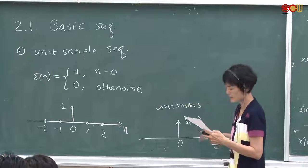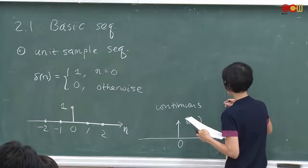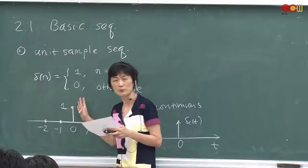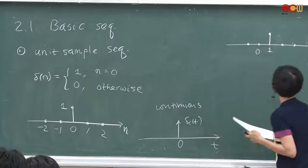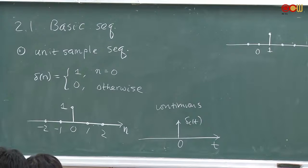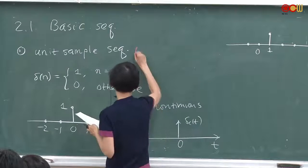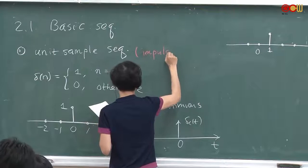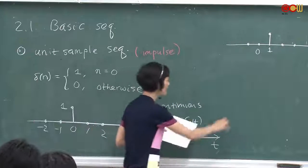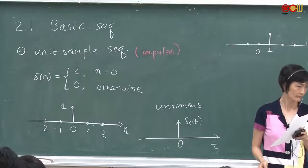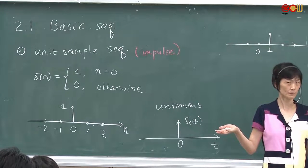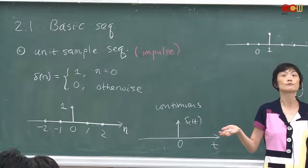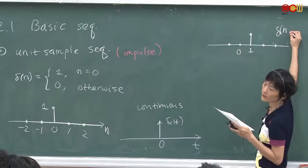This is delta(n) and here's the continuous version. We may also shift the impulse around — the non-zero sample may not be at 0, it may be somewhere else. How can we describe it mathematically in terms of the impulse? A shift to the right would be delta(n minus 1).